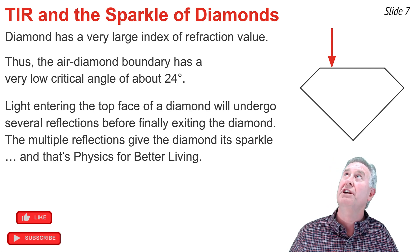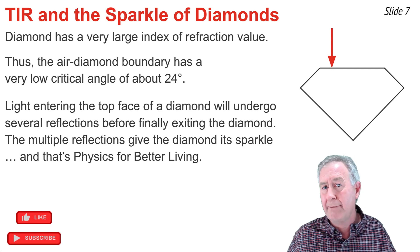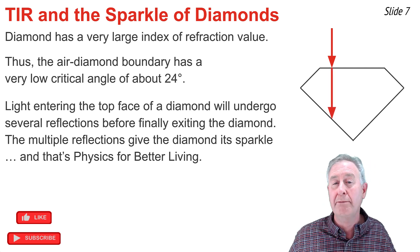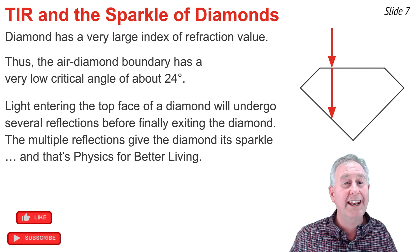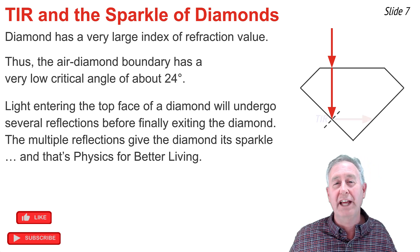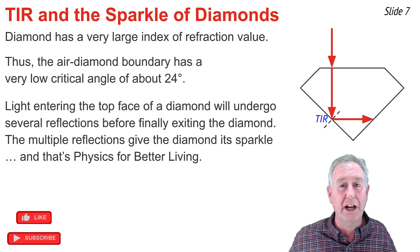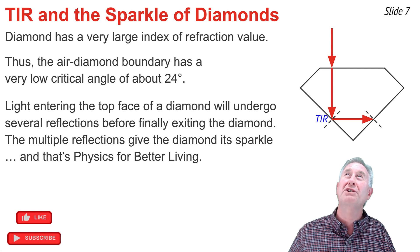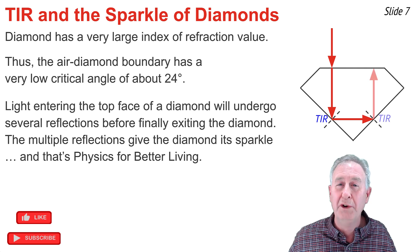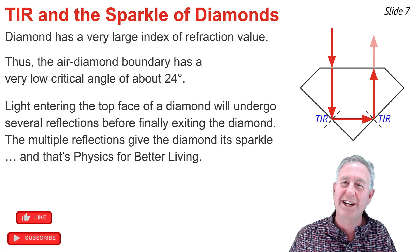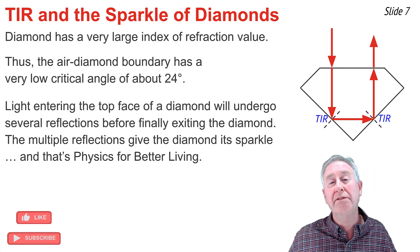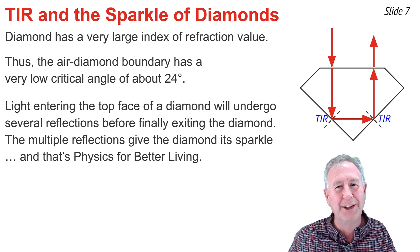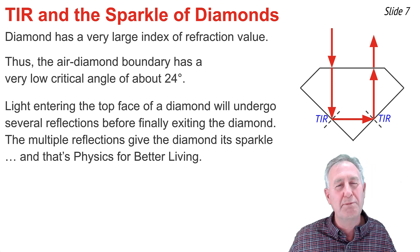Consider the diamond diagram with light entering the top face and approaching the bottom-left face at an angle of incidence greater than the critical angle. The light undergoes total internal reflection and approaches the opposite side again at an angle greater than the critical angle, undergoes another TIR, and finally exits the diamond. These multiple reflections within the diamond gemstone give it its brilliance or sparkle — an example of physics for better living.